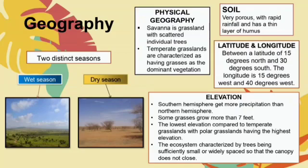Latitude and longitude: between a latitude of 15 degrees north and 30 degrees south, and a longitude of 15 degrees west and 40 degrees west. Elevation: the southern hemisphere gets more precipitation than the northern hemisphere. Some grasses grew taller than seven feet. Savannas have the lowest elevation compared to temperate grassland, with polar grasslands having the highest elevation.